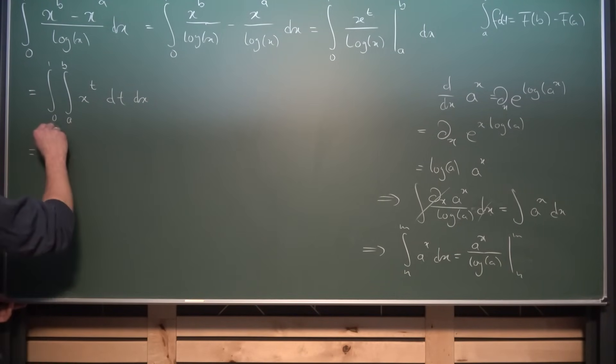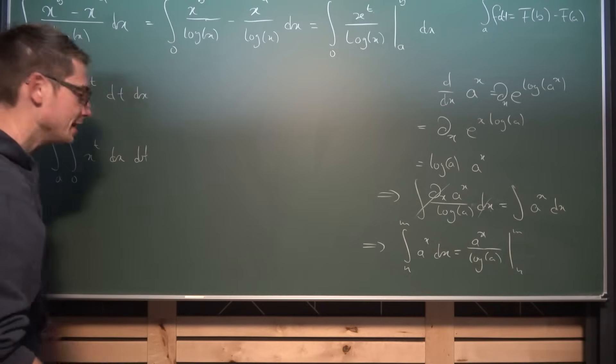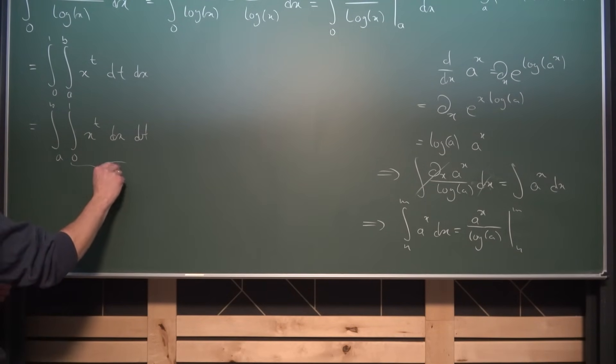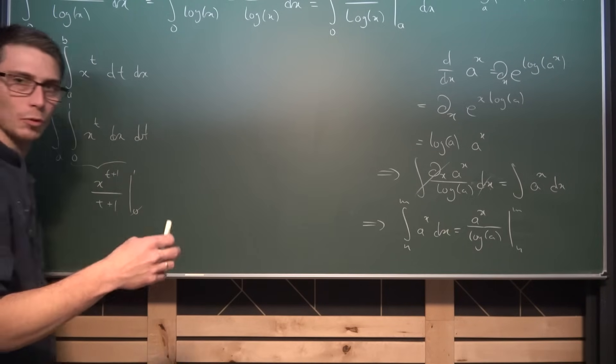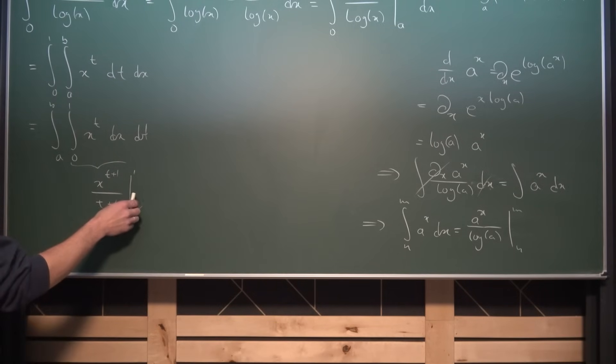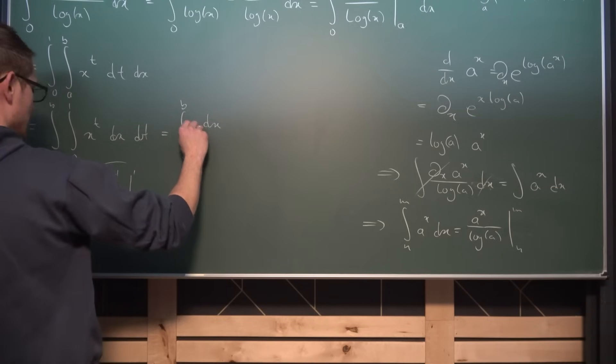Giving us the integral from a to b applied to the integral from 0 to 1 of x to the t. At first integrate with respect to x and then with respect to t. And integrating a polynomial of degree t is very easy. This is just gonna be x to the t plus 1 divided by t plus 1 and evaluated from 0 to 1. Well on 0 it's gonna vanish because it's a parent function, and also on 1 we are gonna get 1 to t plus 1 so it's just 1 over t plus 1. So we are gonna end up with the integral from a to b of dt divided by t plus 1.